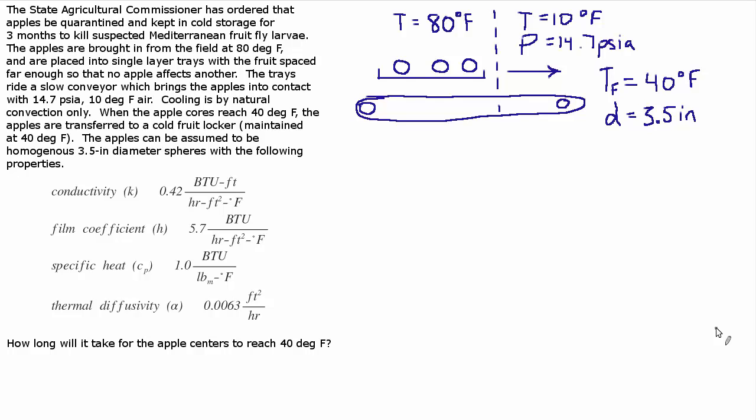The trays ride a slow conveyor which brings the apples into contact with 14.7 psi 10 degree air. Cooling is by natural convection only. When the apple cores reach 40 degrees the apples are transferred to a cold fruit locker maintained at 40 degrees.